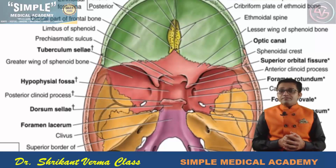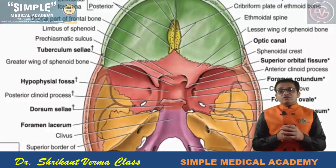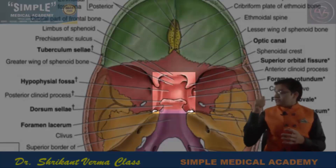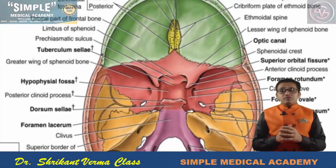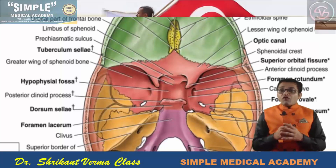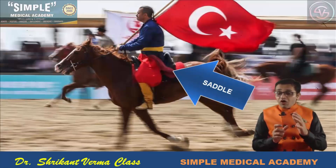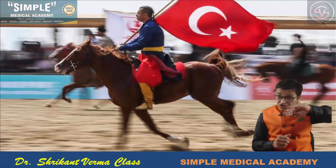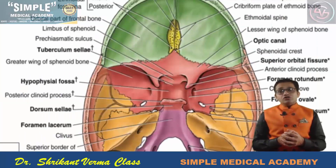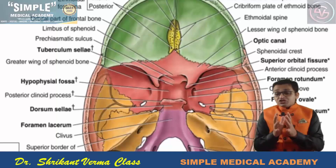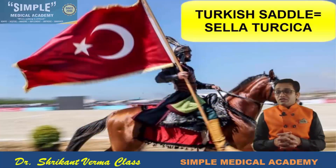A very important fact: the body of the sphenoid is depressed like a saddle. The saddle is the instrument used for sitting during horse riding. In the sphenoid bone, the body is depressed just like a saddle. This saddle is also known as 'Sella,' and it resembles the saddle used in the Turkish country, which is why it is known as 'Turcica.'